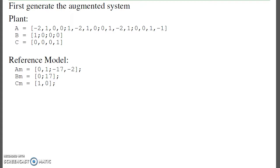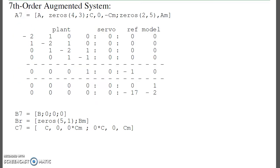So, what I first do is generate the augmented system. We've got the plant dynamics, the reference model dynamics. I'll then put them all together with the servo compensator. So, here's the plant. Here's the servo. Here's the reference model. I'll have the output be the plant's output and the reference model output for my step response, so you can see if it's tracking.